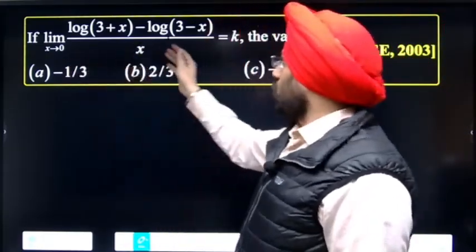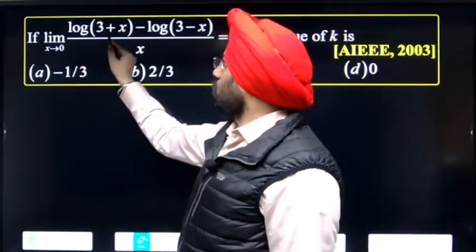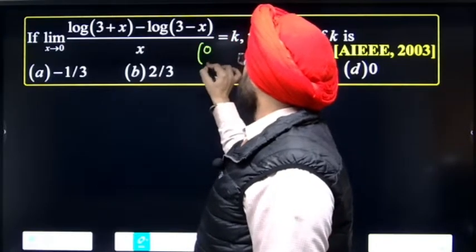Limit as x approaches 0 of log term minus log term. If you put x equals 0, we get log 3 minus log 3 divided by 0, which means 0 by 0.